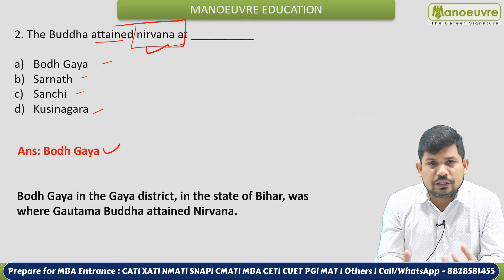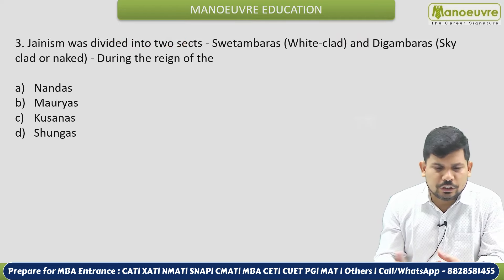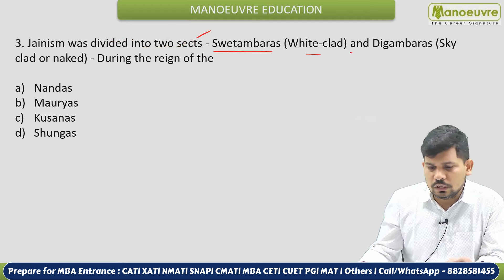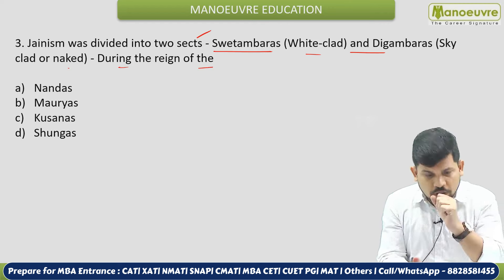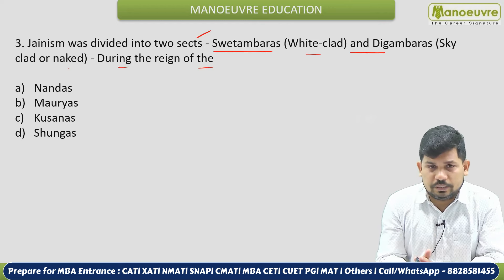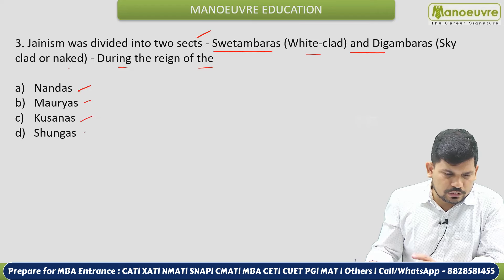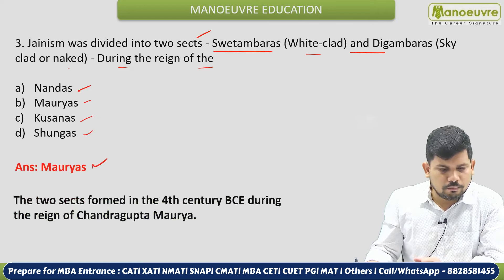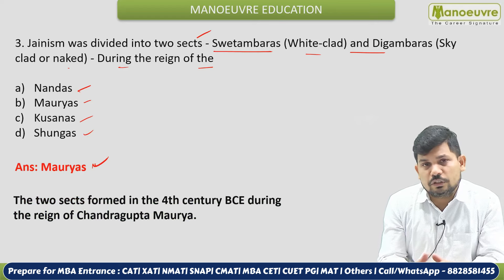Buddhism and Jainism are two important religions from a history point of view. The next question from Jainism: Jainism was divided into two sects — Swetambar (white-clothed) and Digambar (sky-clothed). During the reign of which dynasty did this division happen? The correct answer is the Maurya Empire — during the period of Chandragupta Maurya, Jainism was divided into two parts.